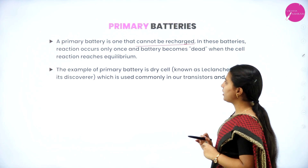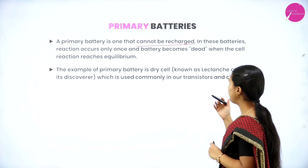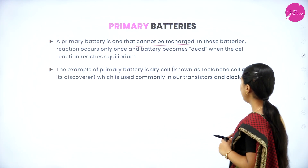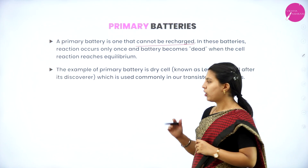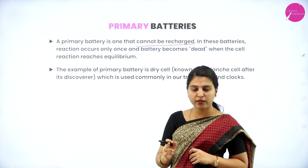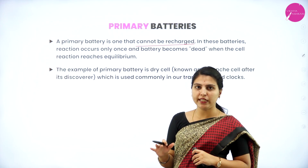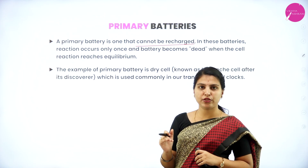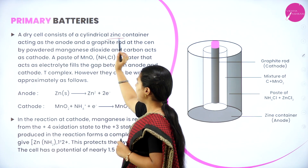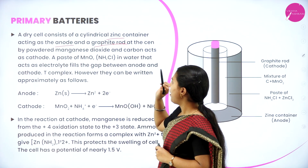In primary batteries, the reaction occurs only once and the battery becomes dead when the cell reaction reaches equilibrium and electricity is completely discharged. The example of a primary battery is the dry cell, commonly used in clocks and transistors. Primary batteries, once completely used, are considered dead as no further reaction can occur.